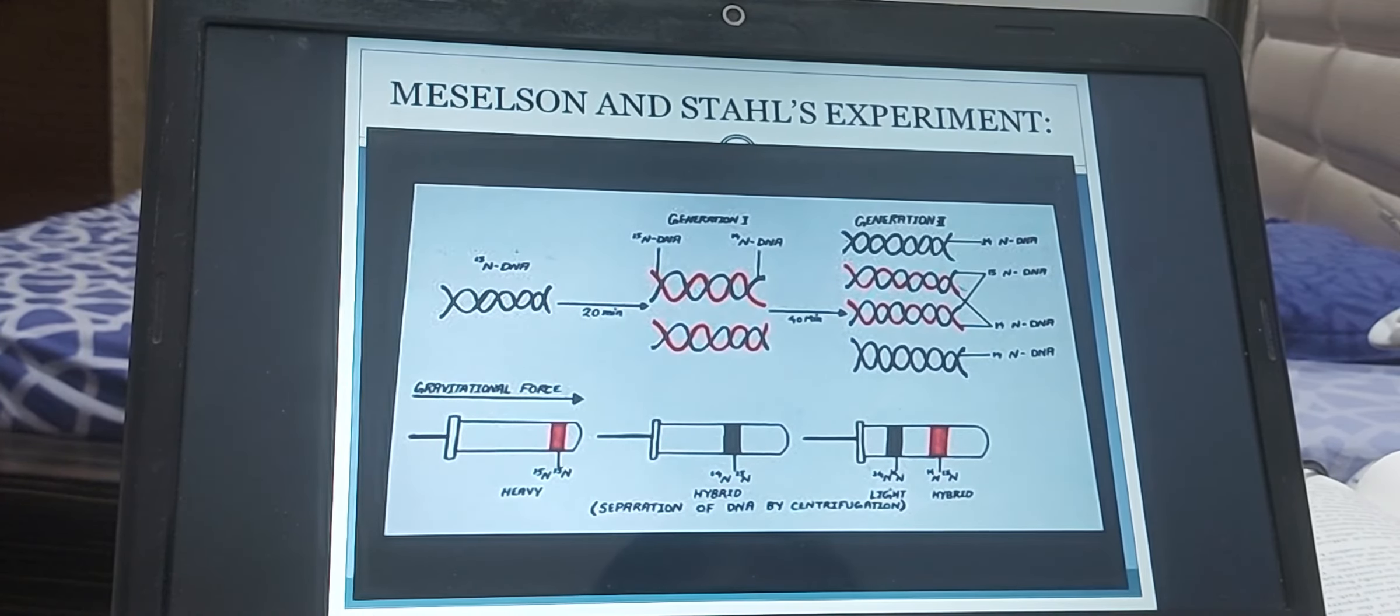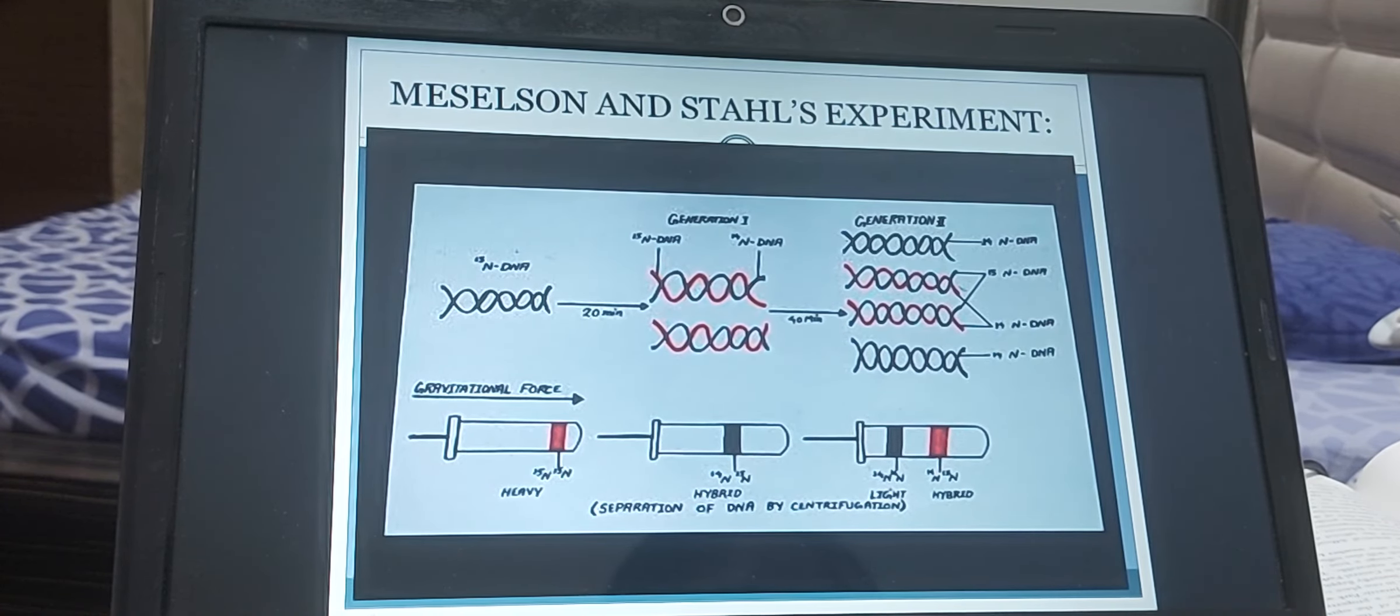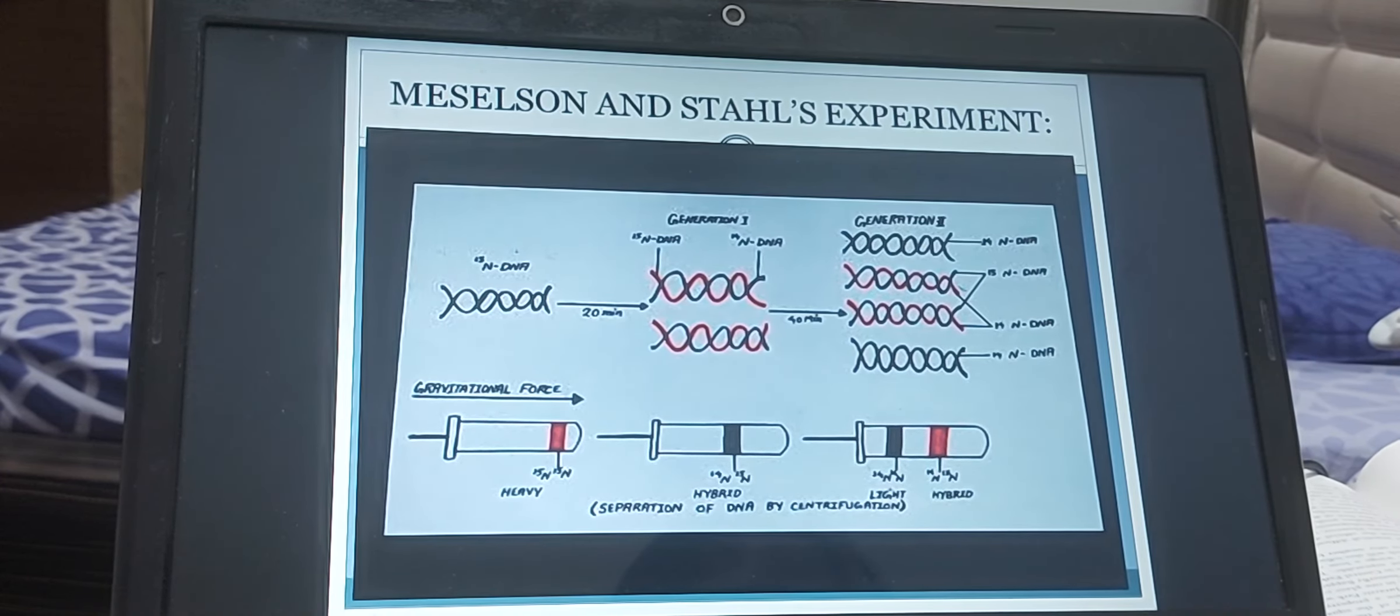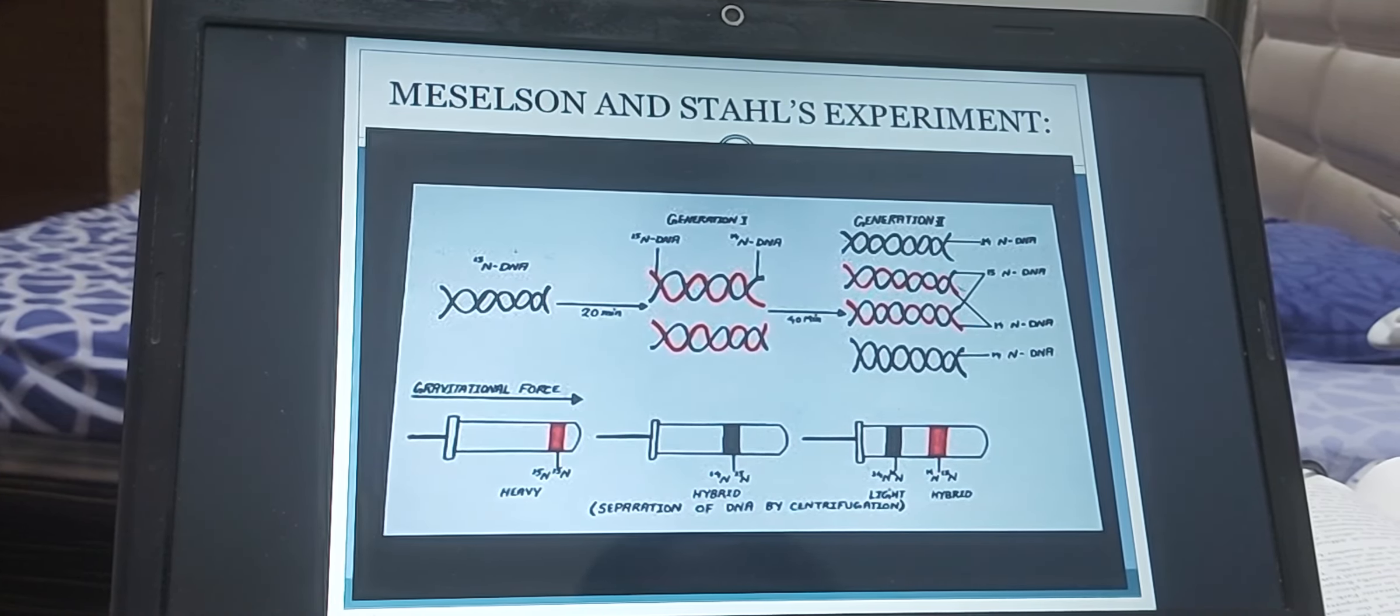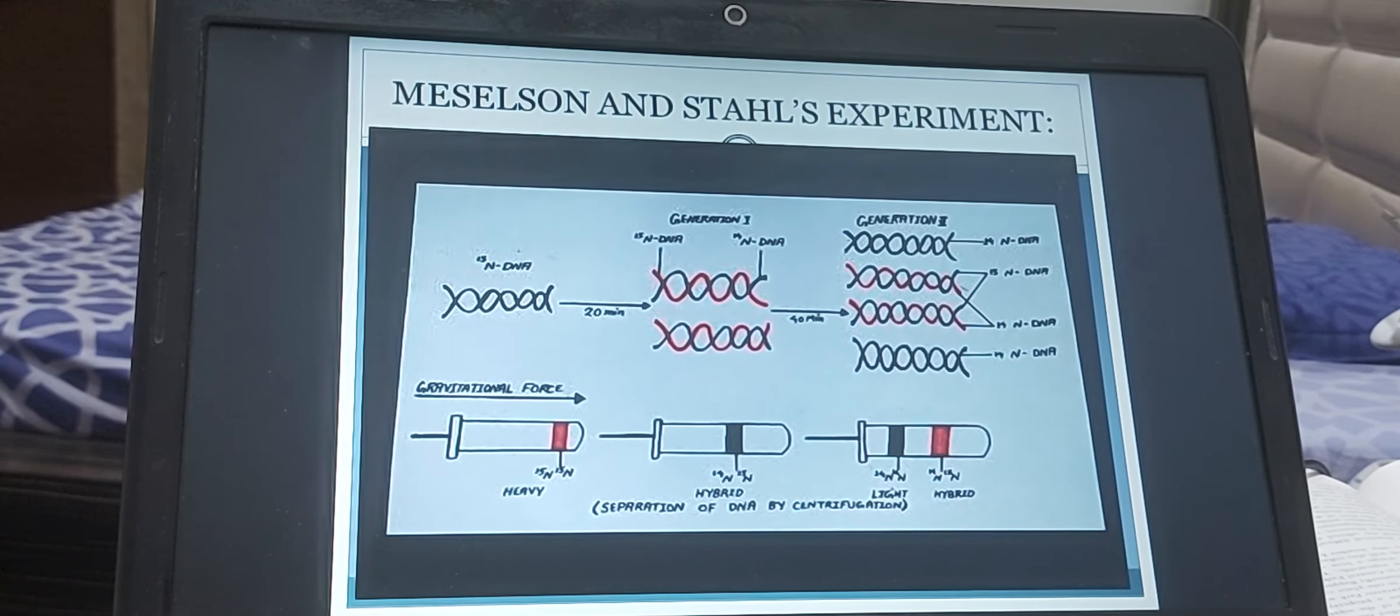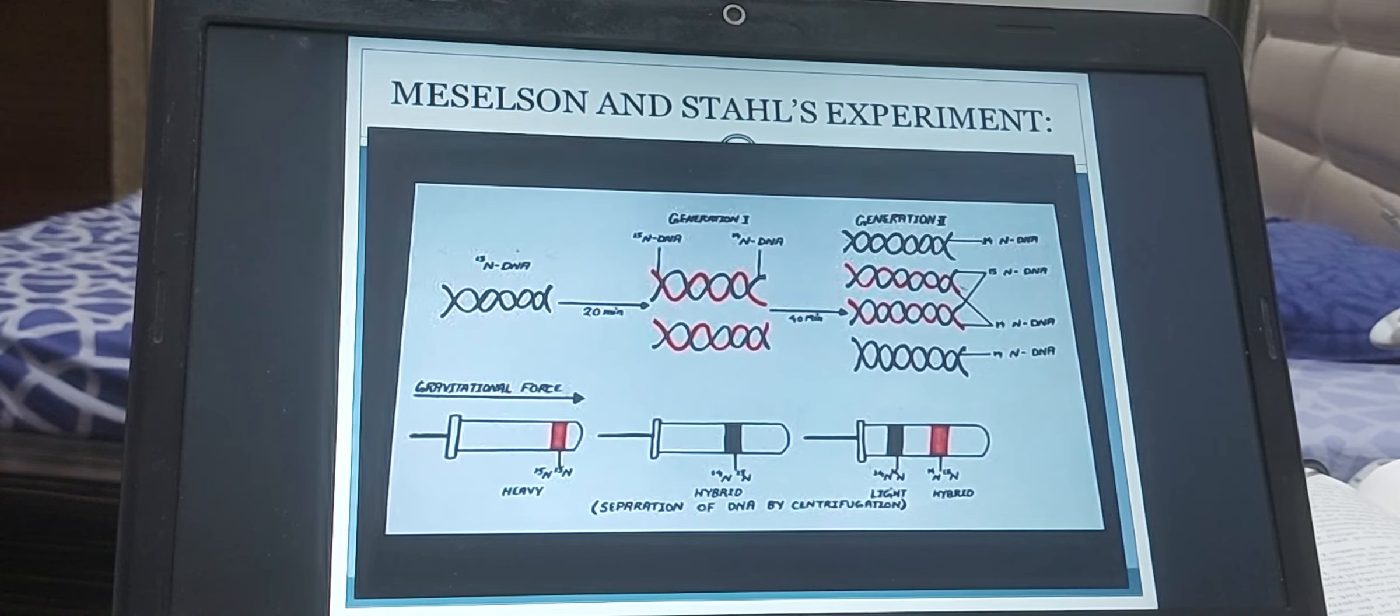Later on by Taylor and his colleagues, they confirmed the same in case of the Vicia Faba. That one is the faba beans. They concluded this with the help of an experiment using the radioactive thymidine. And they also confirmed that the DNA replication is a semi-conservative mode of replication. So this is all about the history and the introduction about the DNA replication, the mechanism and the process I am going to discuss in my next video.